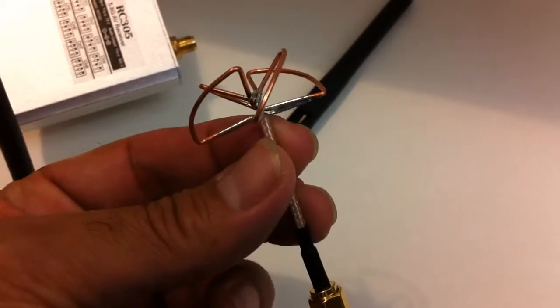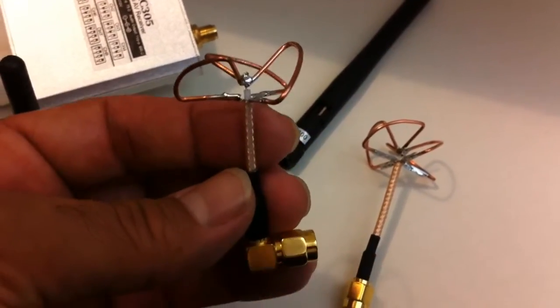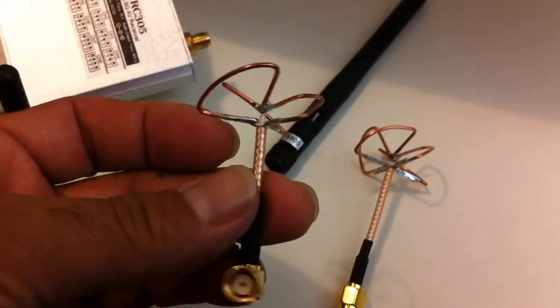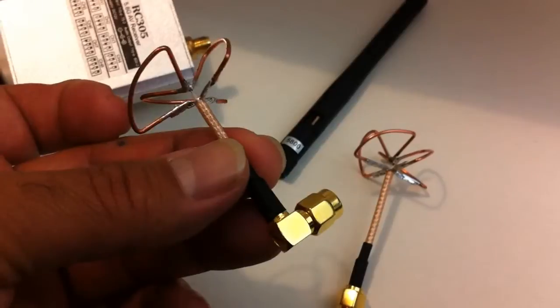Skew planar for your receiver and we have the cloverleaf for your transmitter which goes on your aircraft. What I'll do now is quickly run you through the aircraft and the setup that we have.